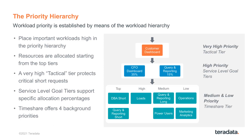But that's what we're giving it as an entitlement. And anything it doesn't use immediately flows to the other workloads below it in the hierarchy. So there's always allocation that's unused from the top of the priority hierarchy that flows down to the bottom.